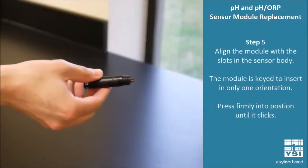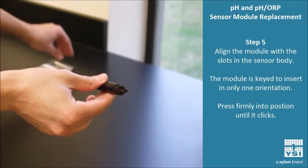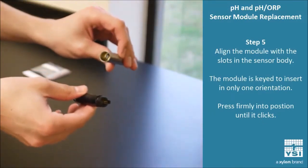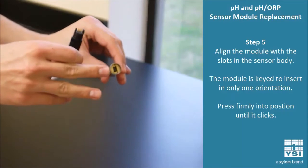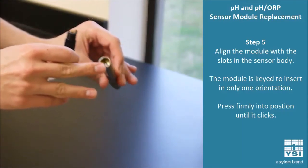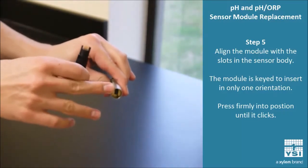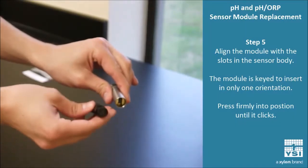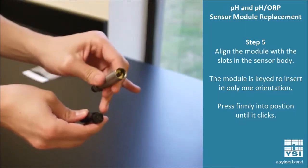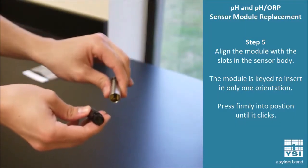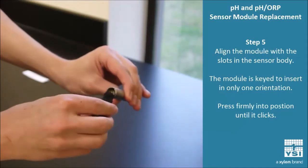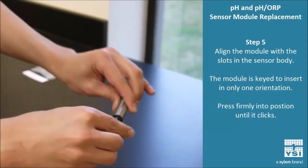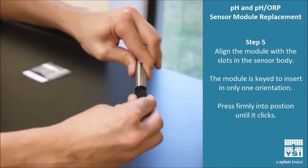Step five is now to install the new sensor module into the probe base. Inside the cavity here, you can see that there are plenty of slots. There's a larger opening and a smaller opening. You want to make sure that those line up with the pins that are on the bottom of the module. Once you have those lined up to the best of your ability, you can plug it in about halfway.